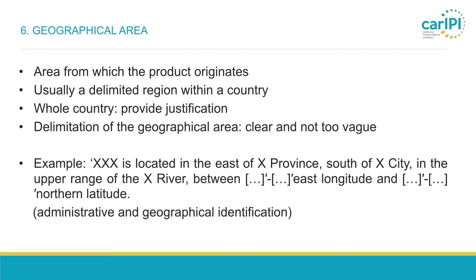The sixth heading in the summary specification is the geographical area — the area from which the product originates. Usually this would be a delimited region within the country. There are some cases where the GI will cover the whole country, but in this case the Commission would need a specific justification. The delimitation of the geographical area should be clear and not too vague. A good way of describing the geographical area is by referring to administrative or political boundaries, such as specific municipalities. In this anonymized example, the application referred to a province, a city, a delimitation by a river, and also to coordinates, identifying the geographical area in both administrative and geographical terms.